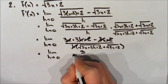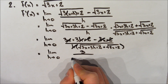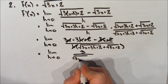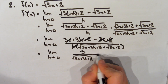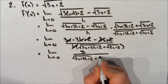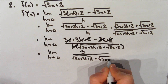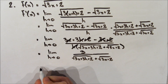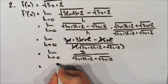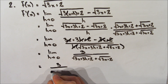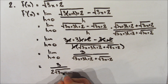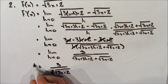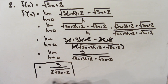This leaves us with the limit as h approaches 0 of 3, over the square root of 3x plus 3h plus 2, plus the square root of 3x plus 2. Evaluating the limit by substituting 0 for h, we get 3 over 2 times the square root of 3x plus 2. That's our derivative.